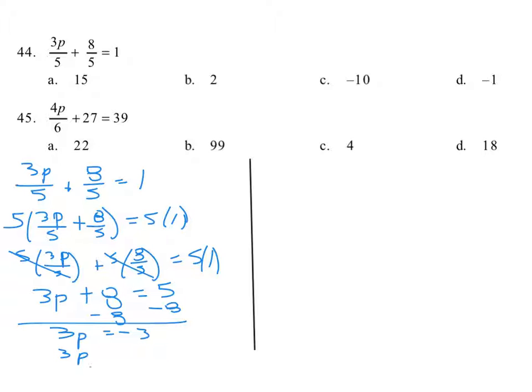If I was to divide those by 3, the number in front of p, we would find p equals negative 1. That's our answer. There it is, d.